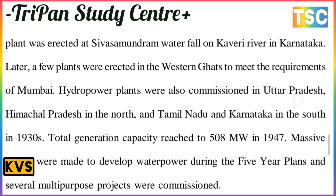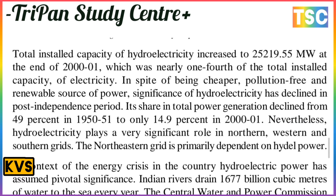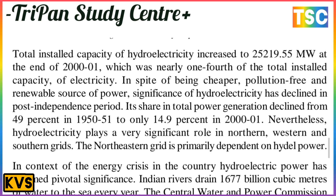Total installed capacity of hydroelectricity increased to 25,219.55 megawatt at the end of 2000-2001, which was nearly one-fourth of the total installed capacity of electricity. Hydroelectricity began to be cheaper, pollution-free, and a renewable source.